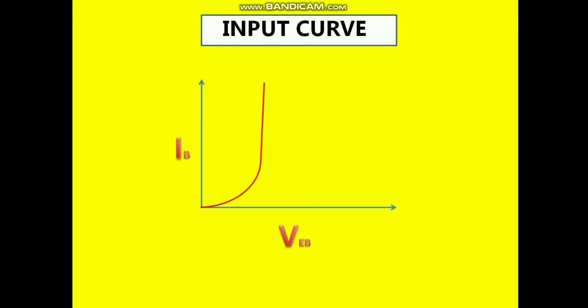From this graph we calculate a small value of resistance. Remember, as I said, the voltage should be very low. When the voltage is very low, the current should be very high. And if the current is very high, definitely the resistance value should be very low.